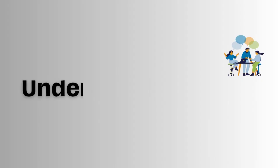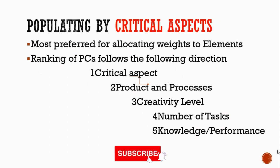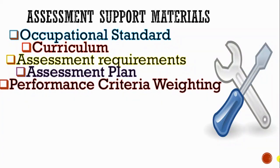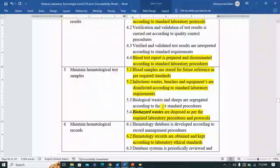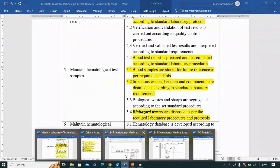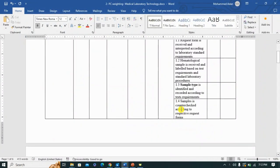Welcome back to our series Understanding C-BET. We are still continuing in our support materials for assessments, and our focus today is part three, a continuation of performance criteria weighting. We started looking at the performance criteria weighting tool and one of the factors we can use to populate that template — critical aspects. Part three is a continuation from where we left off in part two, now looking at the elements of the performance criteria weighting template to populate our PC weighting tool.